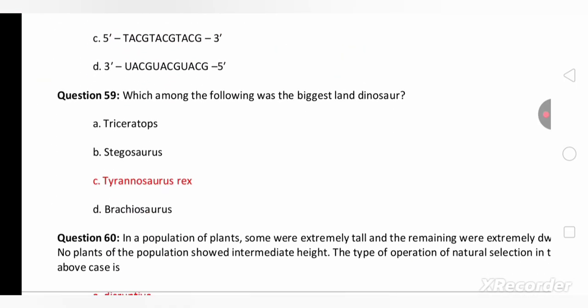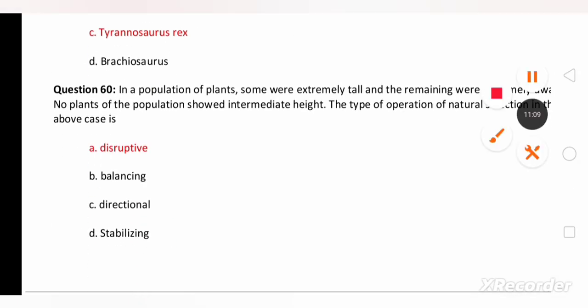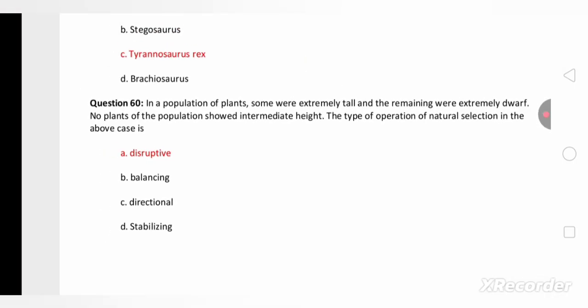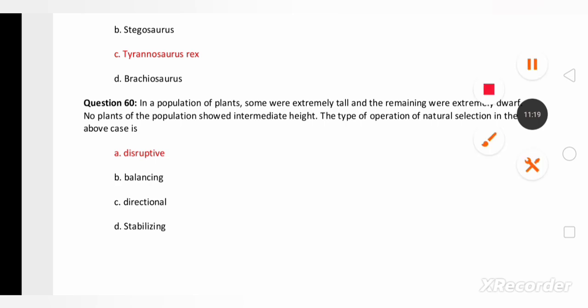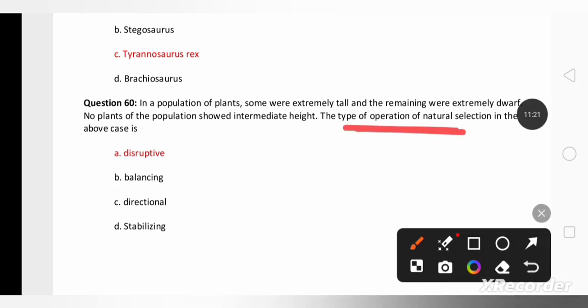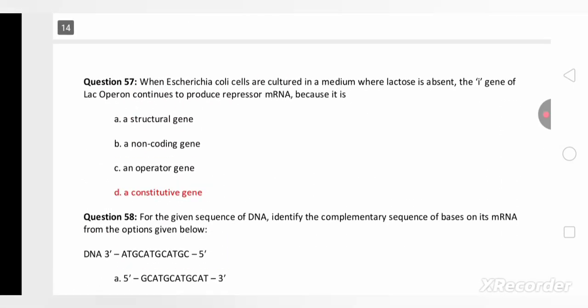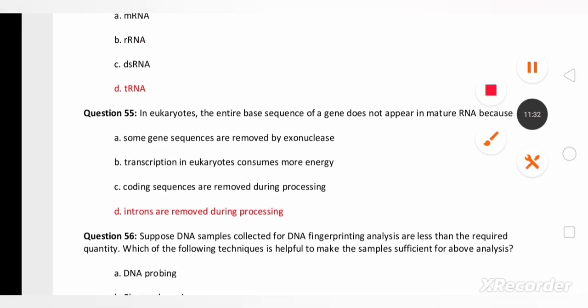Which of the following was the biggest land dinosaur? The biggest land dinosaur is Tyrannosaurus rex. The last question: in a population of plants, some were extremely tall and some were extremely dwarf. No plant of the population showed intermediate height. The type of operation of natural selection in the above is disruptive. So these are the 60 questions of the coming Karnataka CET exam. I hope this is going to be very helpful for you. Thank you students.